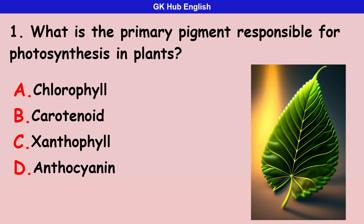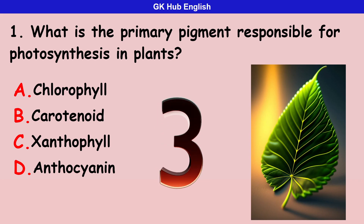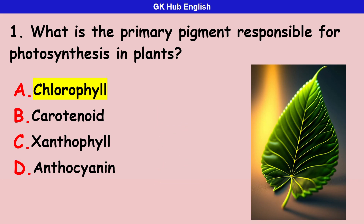First question: what is the primary pigment responsible for photosynthesis in plants? Option A is chlorophyll. Option B is carotenoid. Option C is xanthophyll. Option D is anthocyanin. Correct answer is chlorophyll.